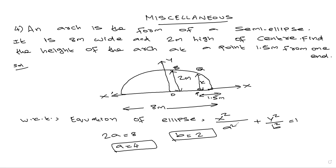Now substituting into the equation of the ellipse: x² / a² + y² / b² = 1 becomes x² / 16 + y² / 4 = 1, since a² = 16 and b² = 4.